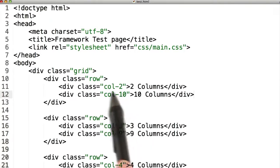So together, they should fill up the entire row. Then we have column three, column nine. Three plus nine is 12, so these two columns should also fill up this row. Let's see if it works.